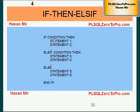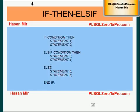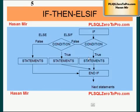If some condition is true, then statements 1, 2, etc. would be executed. Otherwise, condition 2 would be evaluated. If condition 2 is true, then statements 3 and 4 would be executed. Otherwise, if condition 2 is not true as well, then statements 5 and 6 would be executed. So either 1 and 2, or 3 and 4, or 5 and 6 would be executed. Note that else-if and else clauses are optional; the only mandatory clause is the if clause.